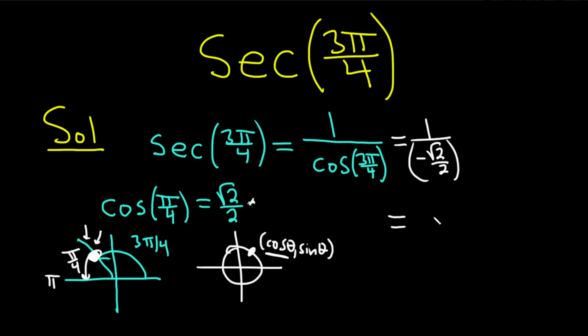So 1 divided by this is 1 times the reciprocal. So that would be negative 2 over root 2. And so we end up with negative 2 over root 2 as the answer.